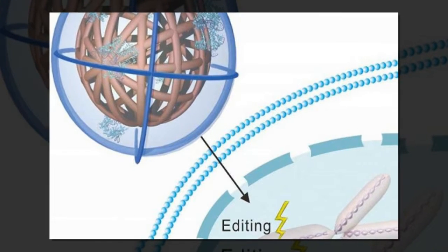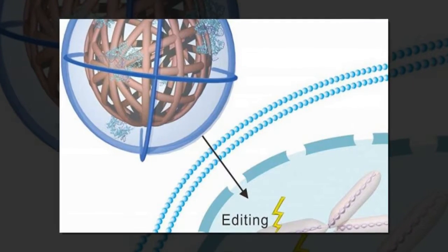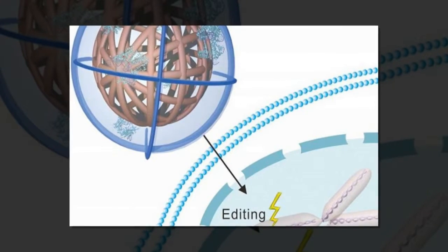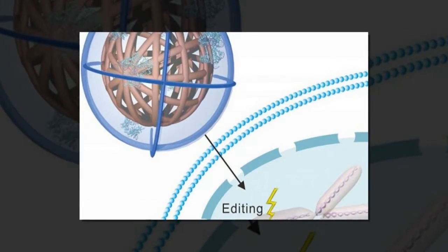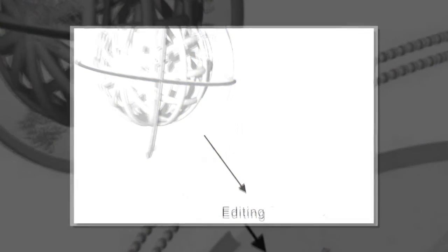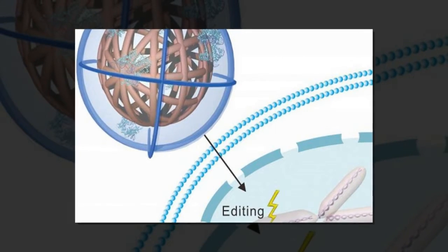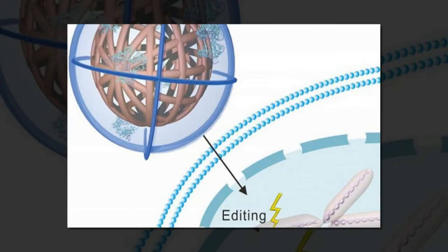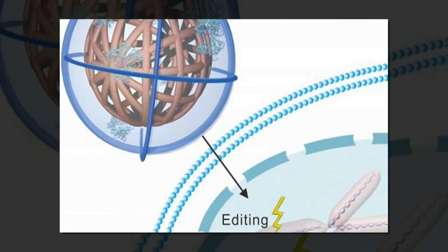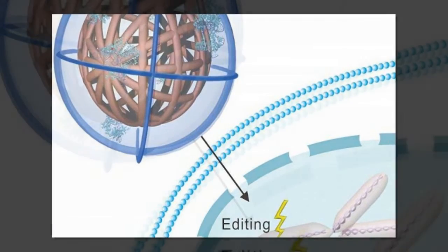Researchers from North Carolina State University and the University of North Carolina at Chapel Hill have for the first time created and used a nanoscale vehicle made of DNA to deliver a CRISPR-Cas9 gene editing tool into cells in both cell culture and an animal model.